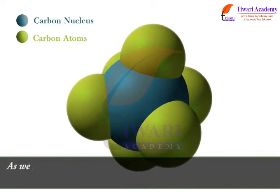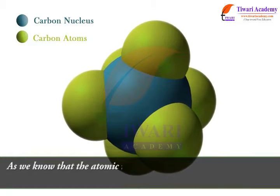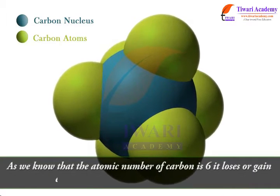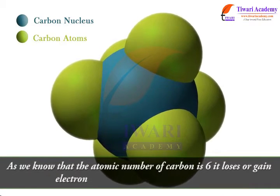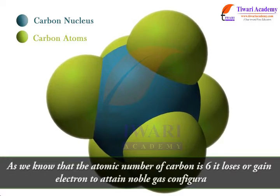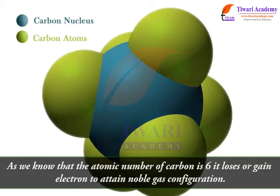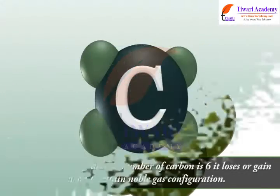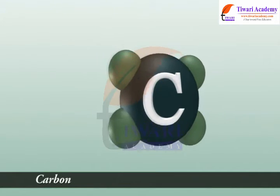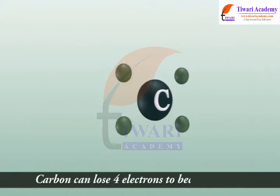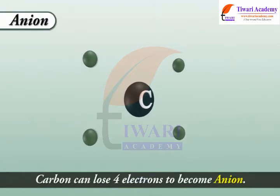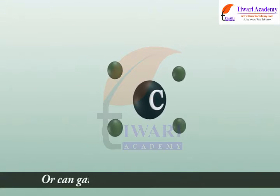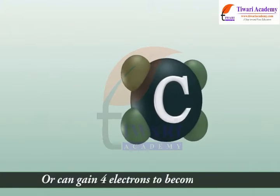The atomic number of carbon is 6, and it loses or gains electrons to attain noble gas configuration. Carbon can lose 4 electrons to become a cation, or can gain 4 electrons to become an anion.